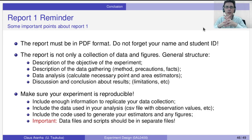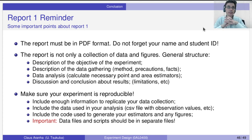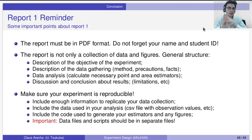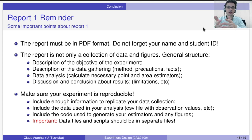About report 1 — the deadline is next week. I hope that you are already doing your experiments and analysis. Let's talk about the format of report 1. There is no fixed format, but there are some guidelines you have to follow. First, the report must be in PDF format — no Word documents, please. Don't forget to add your name and student ID. It's very common for students to not add their names in the report.